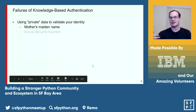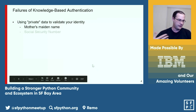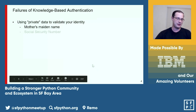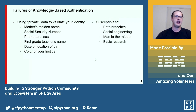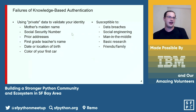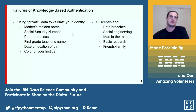Social engineering — it's not a question of if somebody will trick you via a phishing attack or vishing, where they use voice. It's just a matter of time. Man-in-the-middle attacks are very hard to detect. And a lot of things you'd call private data you can just look up on somebody's Facebook account or through some basic research — you can pretty much guess it.